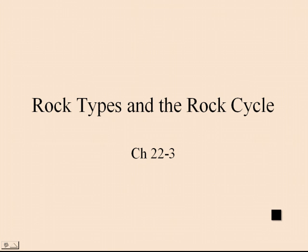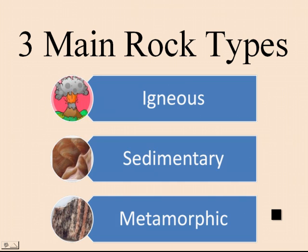This is Chapter 22, Section 3: Rock Types and the Rock Cycle. There are three main rock types — igneous, sedimentary, and metamorphic — and we'll take a moment to talk about each one of these.